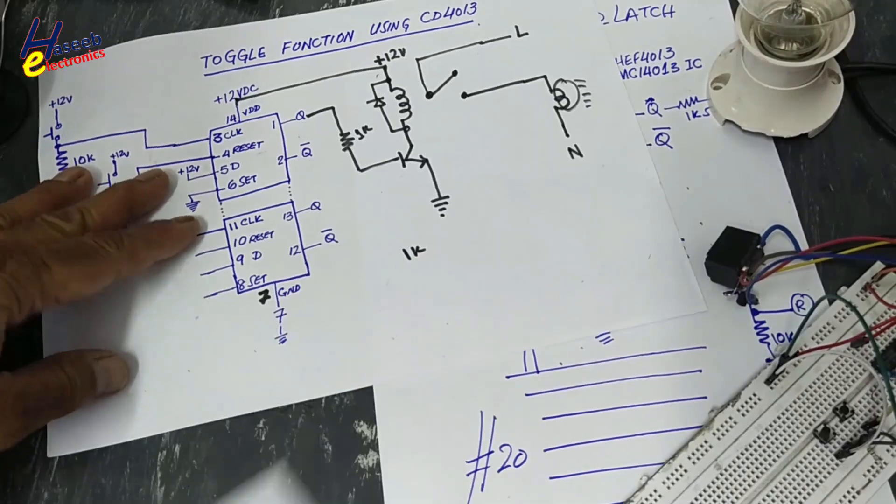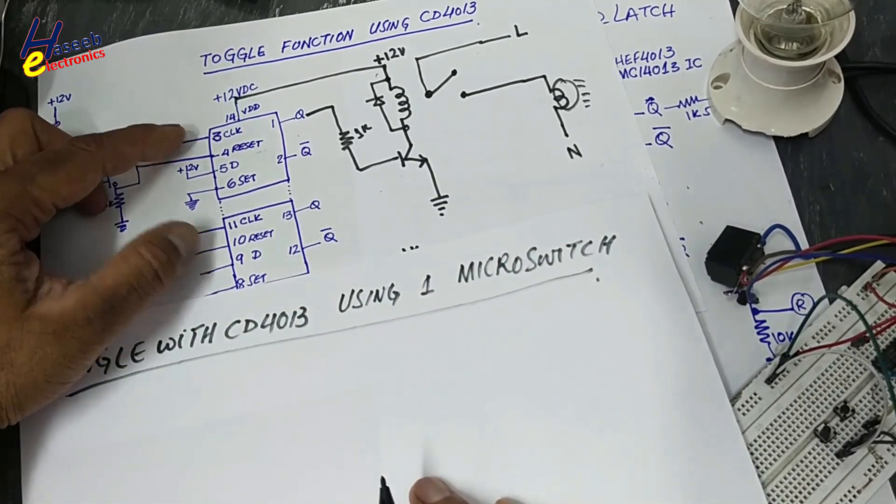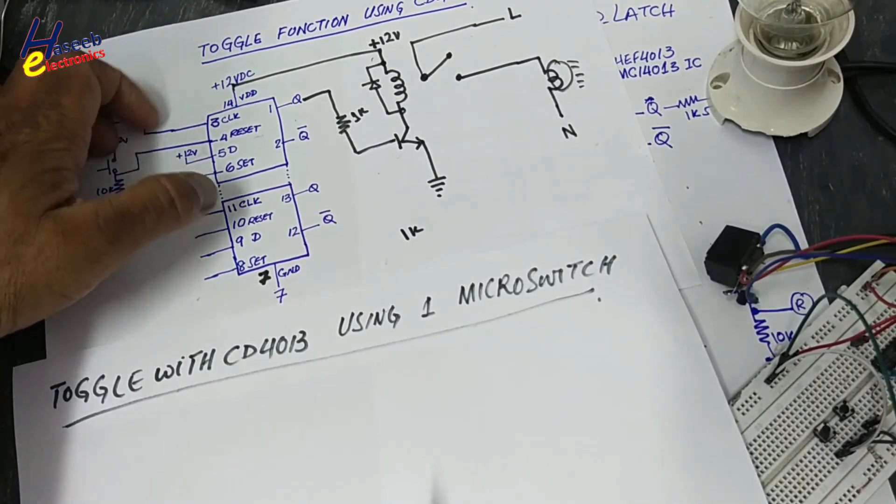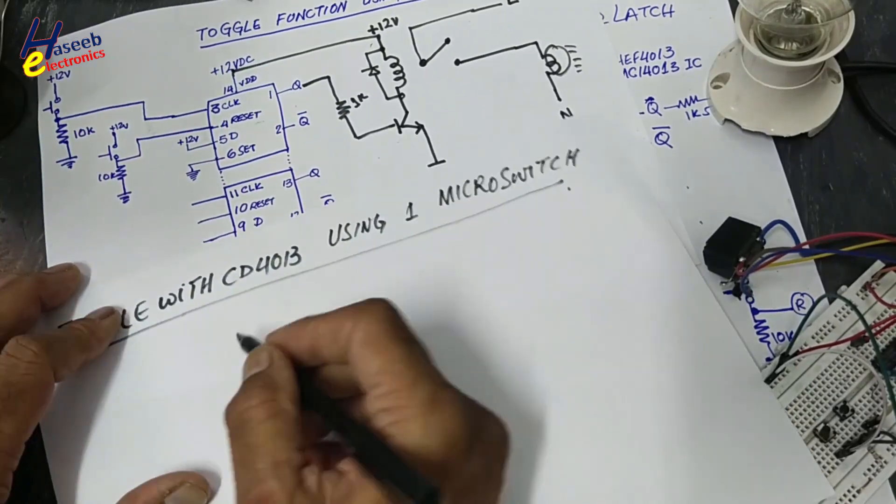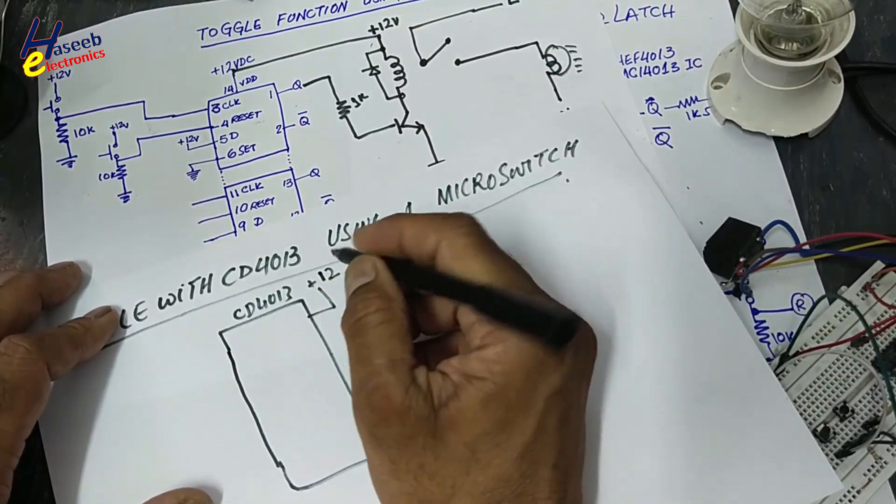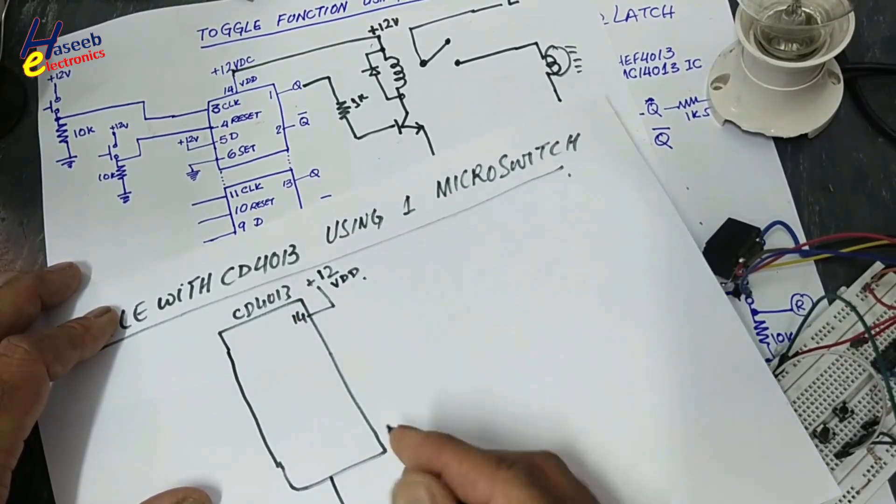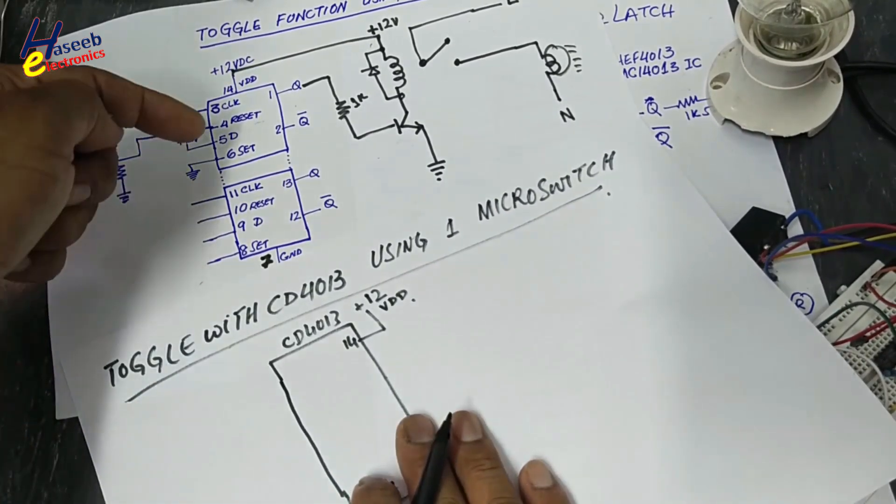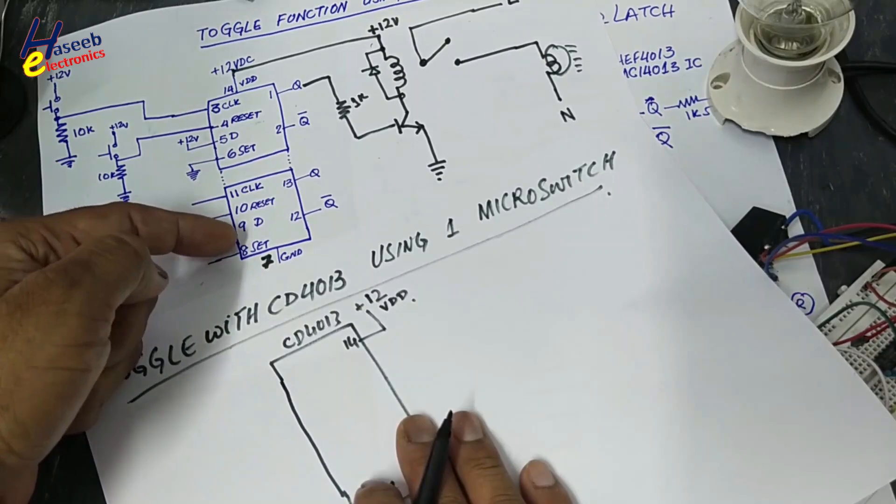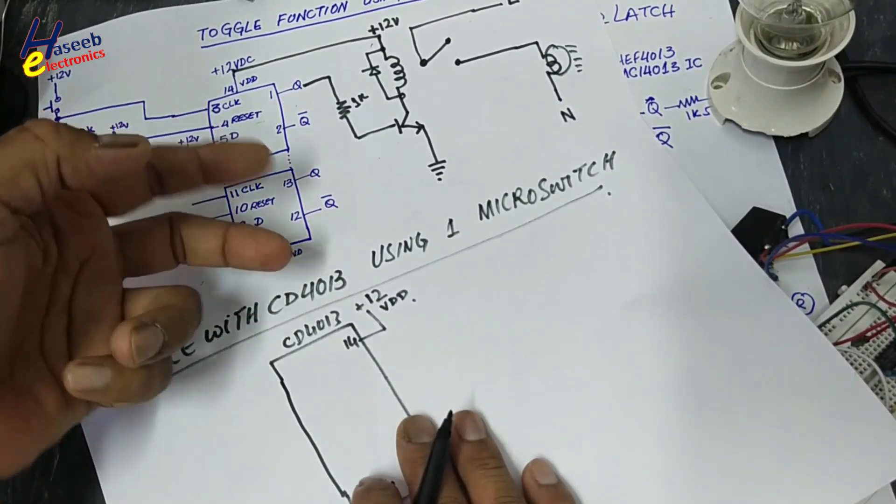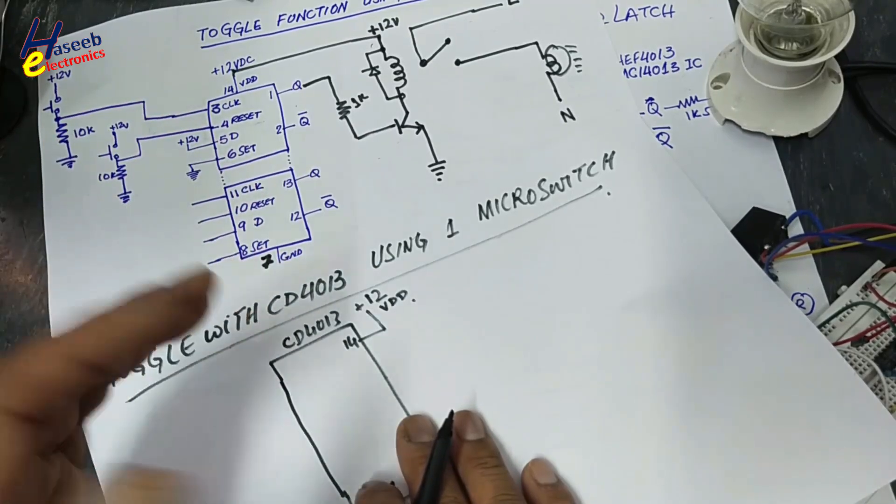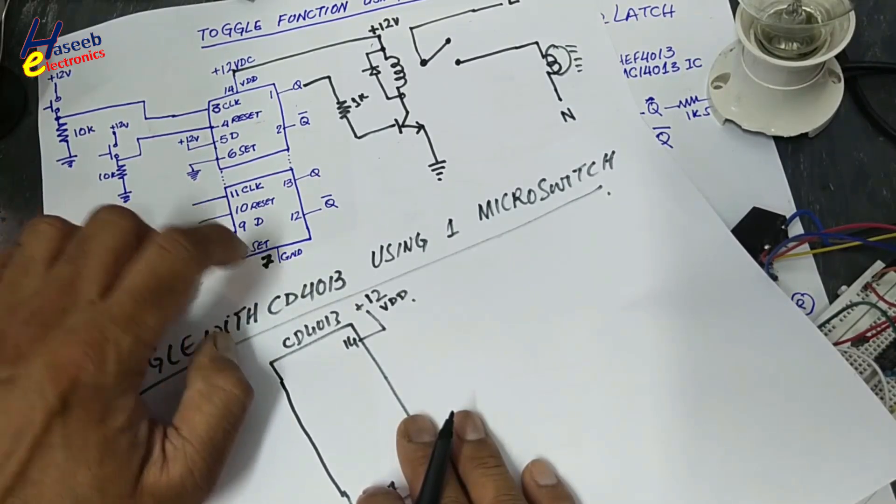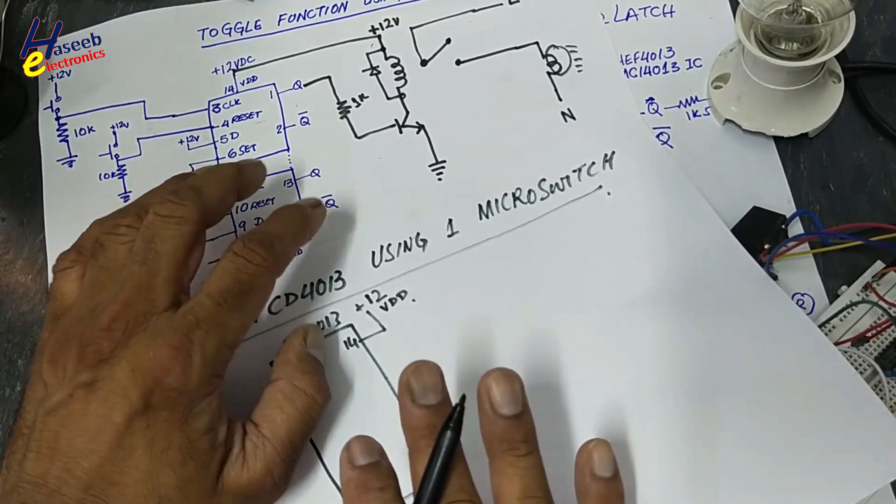CD4013 is dual channel. That means two flip-flops. VDD pin number 14, 3V to 18V. We use 12V. Pin number 7 ground. We have two channels. We can use any one channel. Or we can program both channels to operate separate switches. Both channels are independent from each other. Power supply lines are common, but set, reset, data, clock, output - that are separate from each other.